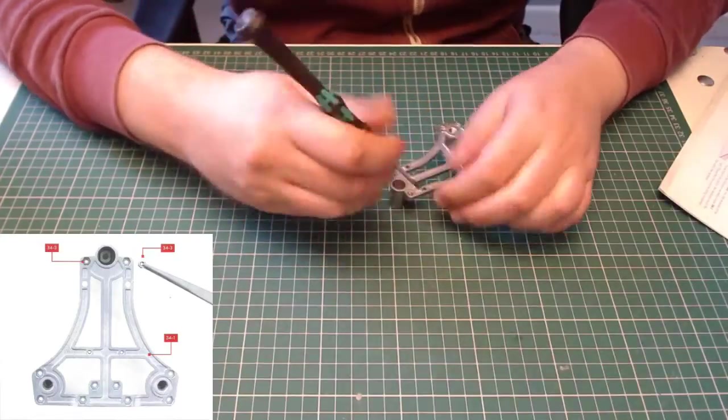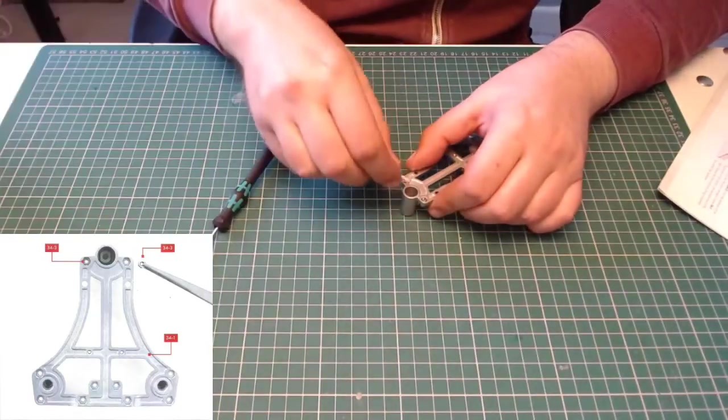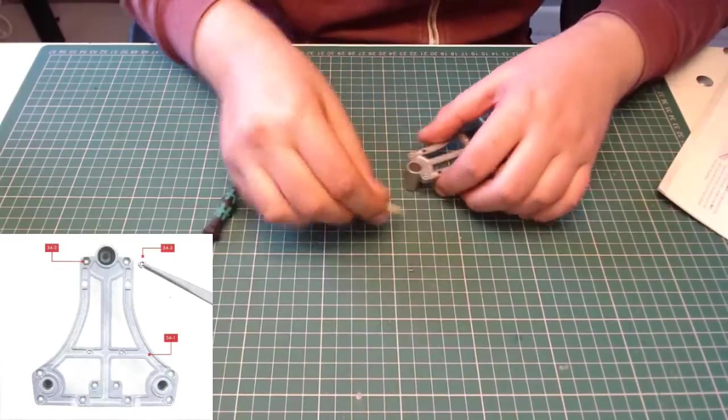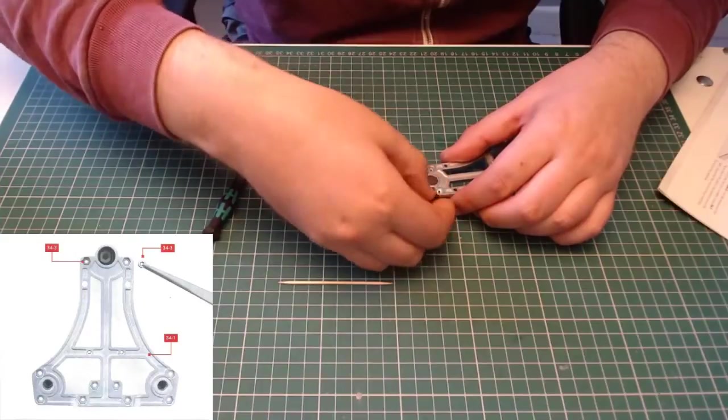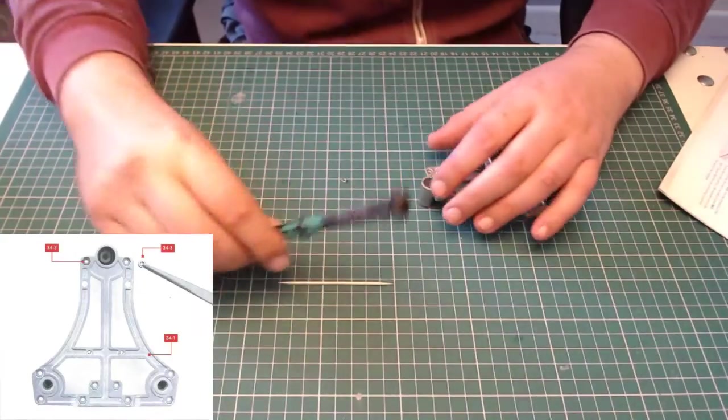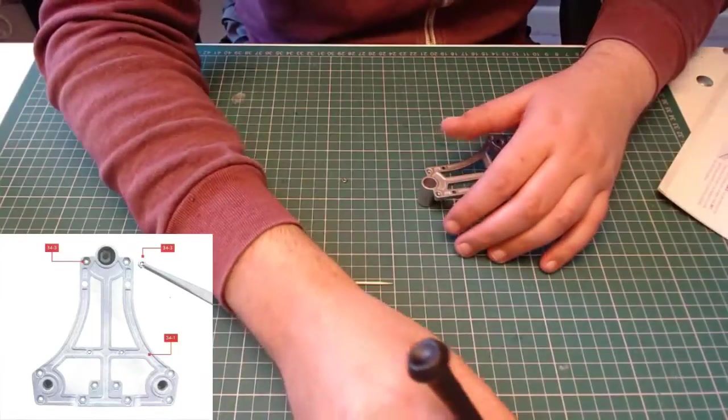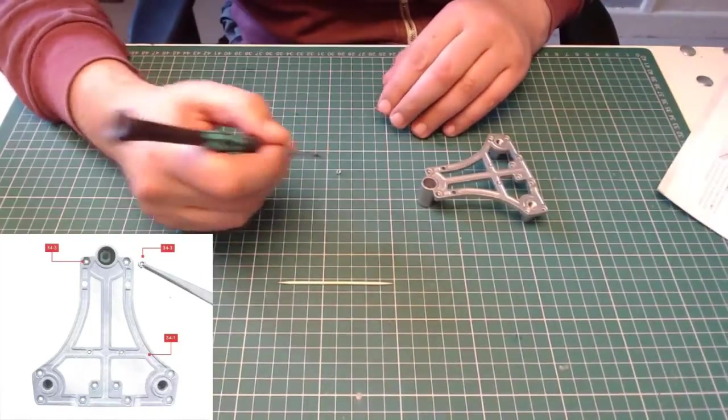Let me just get a cocktail stick and get it out so it goes in properly. Okay, that's in properly. Yeah, so these are not magnetic so I'm not too sure what they're made out of. It should be metal but they're not magnetized.